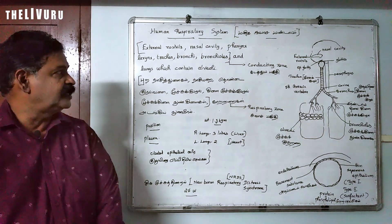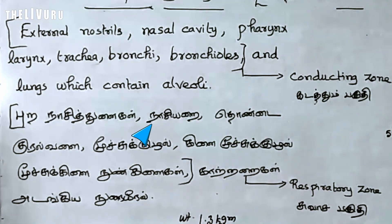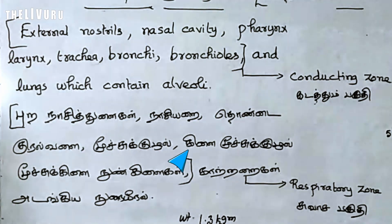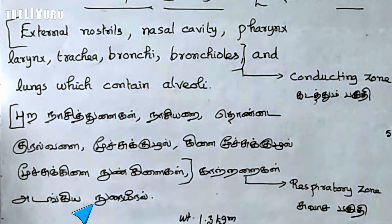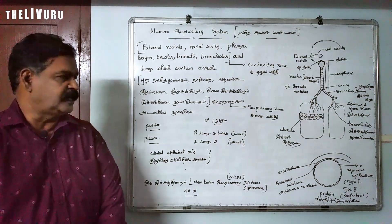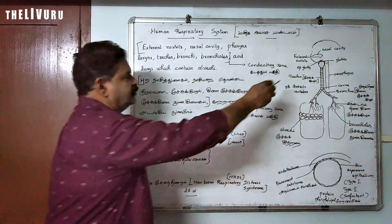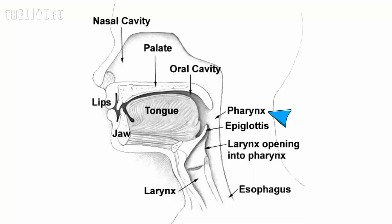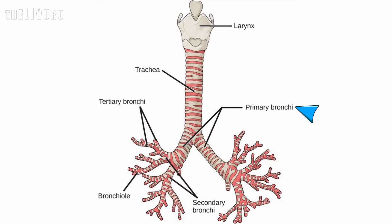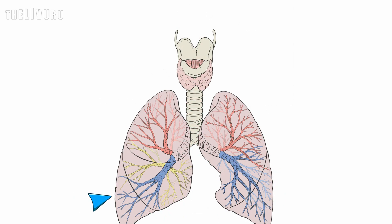The respiratory system of a human consists of: external nostrils (Veli Kura Nasi Tudai), nasal cavity (Nasi Aray), pharynx (Tondai), larynx (Kurali), trachea (Muchu Kurali), bronchi (Kilaai Muchu Kurali), bronchioles, and lungs with alveoli. That is followed by the primary bronchi, secondary bronchi, tertiary bronchi, bronchioles, and finally the lungs.